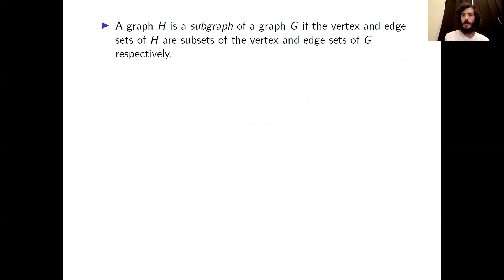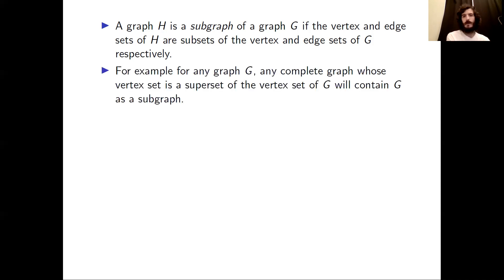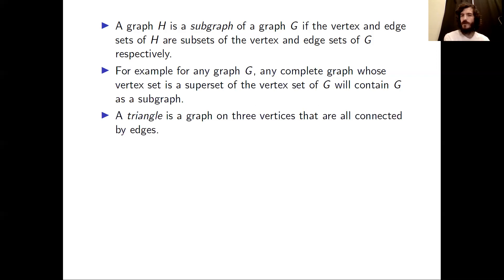Now we'll discuss subgraphs. We say that a graph H is a subgraph of a graph G if the vertex and edge sets of H are subsets of the vertex and edge sets of G respectively. For example, any complete graph whose vertex set is a superset of the vertex set of G will contain G as a subgraph. A triangle is a special kind of complete graph — it is the complete graph K3, a graph on three vertices with all possible edges.